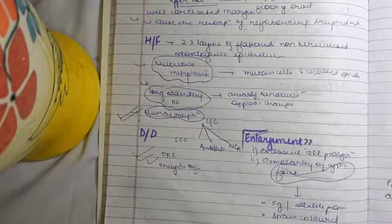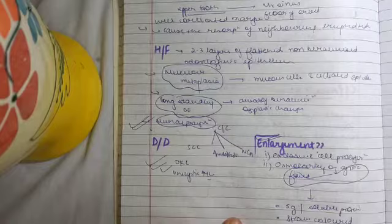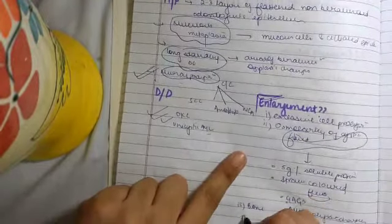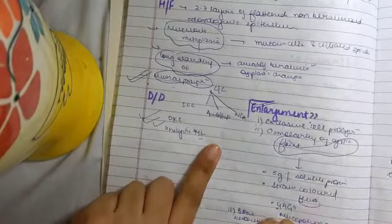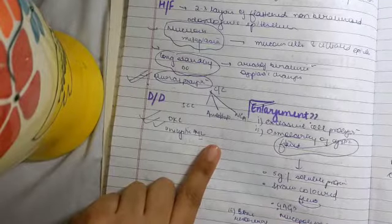Mucopolysaccharides form the cementing substances of the organs like hyaluronic acid, heparin, chondroitin sulfate. The third one is if it resorbs the bone. Hydrostatic pressure - we mentioned it in the pathogenesis.